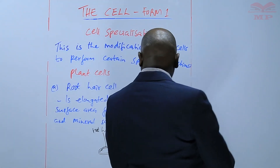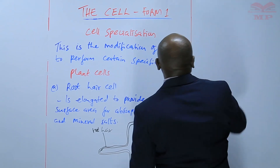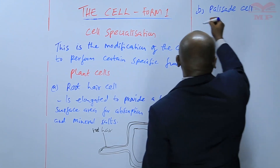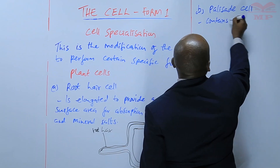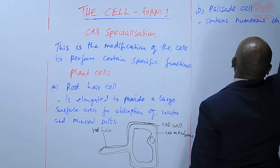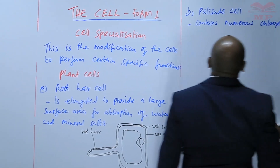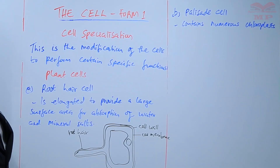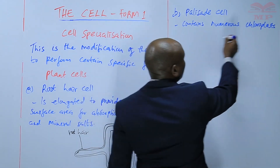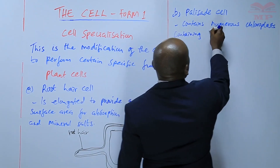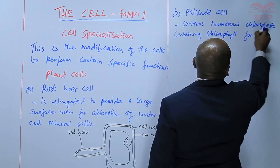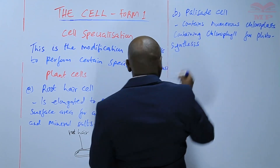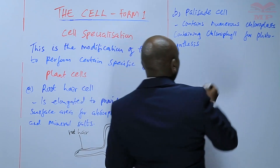Another example of a specialized plant cell is the palisade cell. This one contains numerous chloroplasts. The palisade cell has very many chloroplasts, and that modification is to help carry out photosynthesis. They contain numerous chloroplasts containing chlorophyll for manufacturing food through photosynthesis.